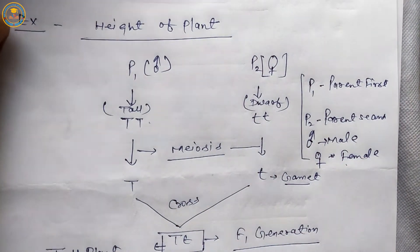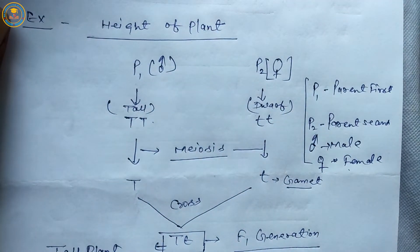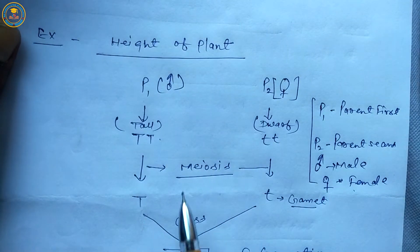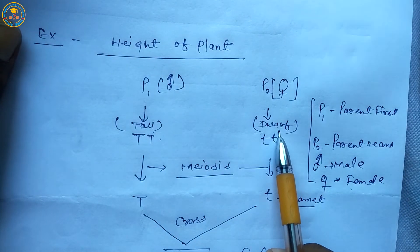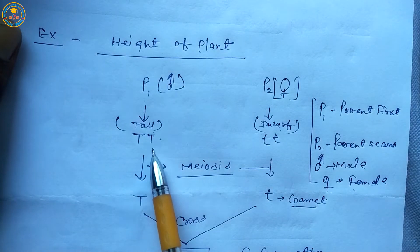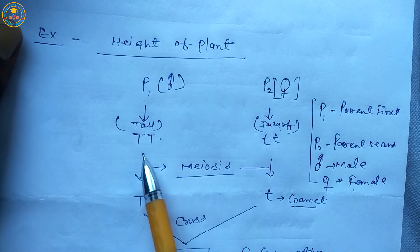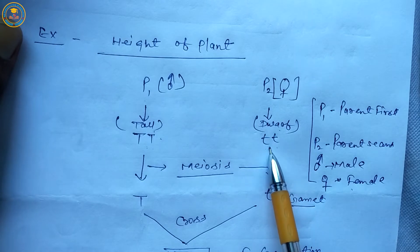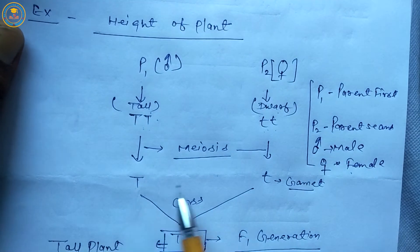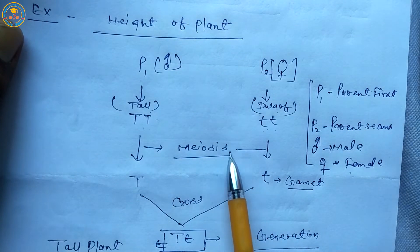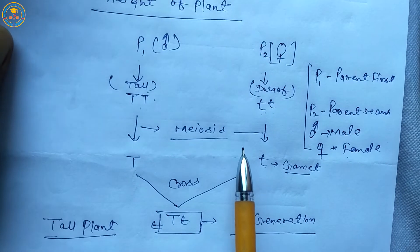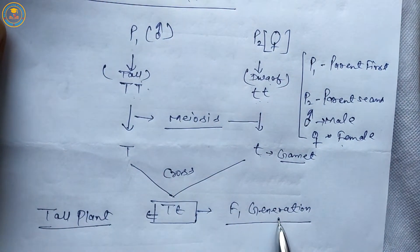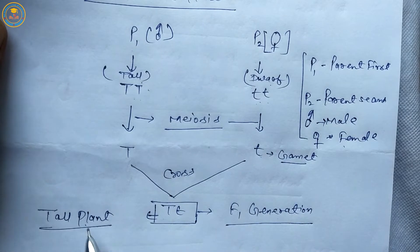I draw a flowchart for the law of dominance. Parent one is tall plant (TT) and parent two is dwarf plant (tt). Mendel represented dominant characters with capital letters and recessive characters with small letters. By meiosis, gametes are formed. When gametes cross each other, they form the first filial (F1) generation, and this F1 generation plant is tall.